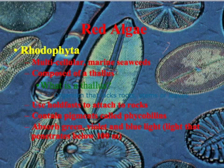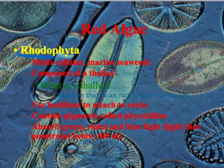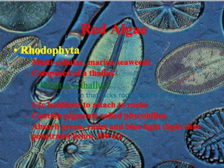Now we move on to the multicellular algae — those were the three types of unicellular. The first multicellular type is Rhodophyta. You can tell it's red by the prefix 'rhodo,' which means red. This is the red phylum — a multicellular marine seaweed composed of a thallus, which is an organism that lacks true roots and instead uses blades. They use holdfasts to attach to rocks and contain pigments called phycobillins, which absorb green, violet, and blue light that penetrates below 100 meters.